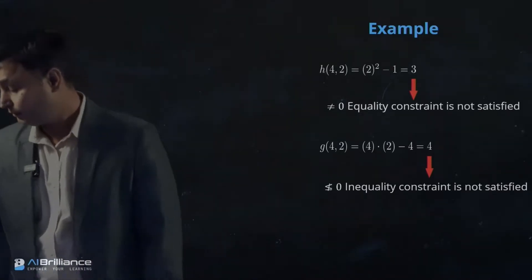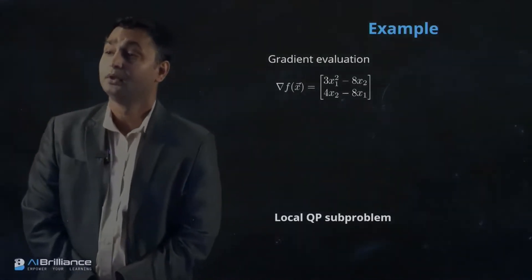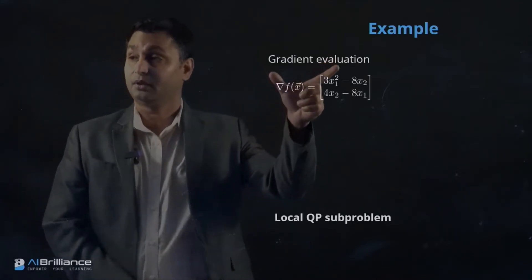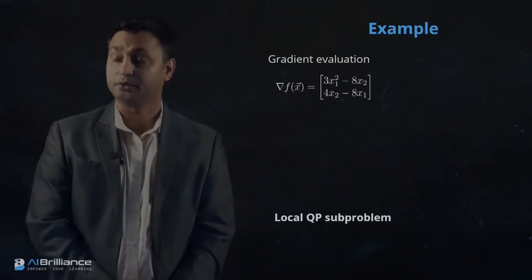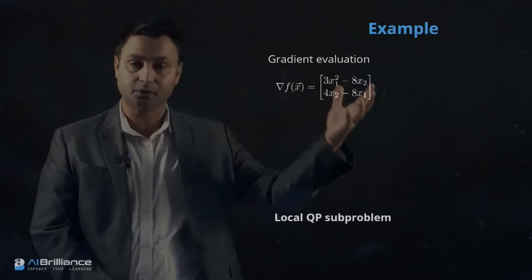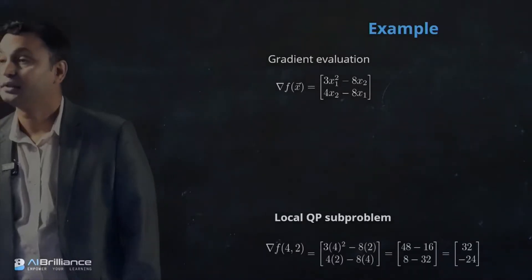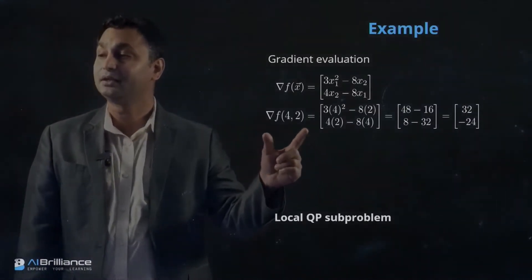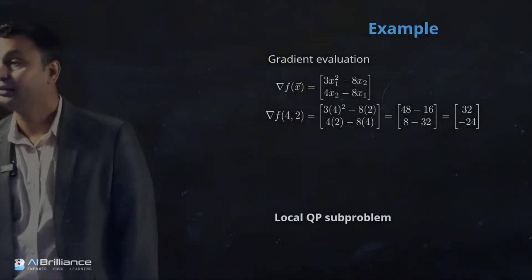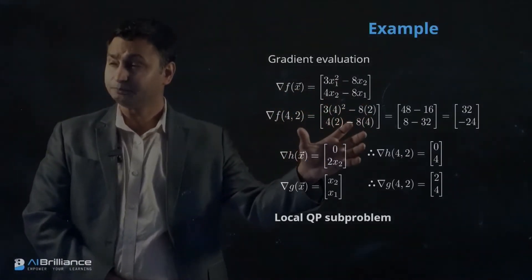Now we are going to formulate the local SQP problem. The first thing we need to do is take the gradient information of the original function with respect to the variables — in our case it's a two-variable problem with x1 and x2. We evaluate that gradient vector at the current solution (4,2), and we get the gradient vector [32, -24]. This vector will be used to create the quadratic program.